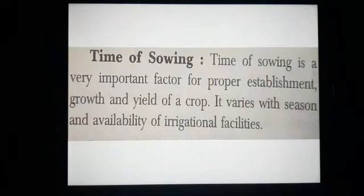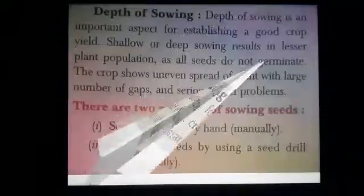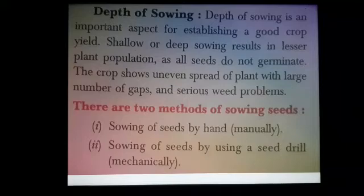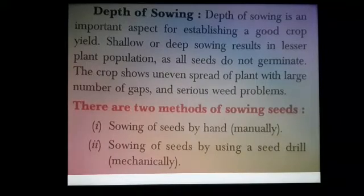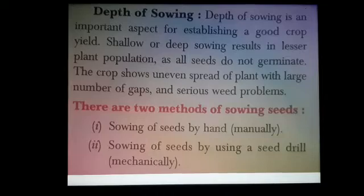The time of sowing is a very important factor for proper establishment, growth, and yield of a crop. It varies with season and availability of irrigation facility. Depth of sowing is also very important. It helps to protect the seed from insects, rodents, and birds, and also helps in proper germination inside the moist soil.